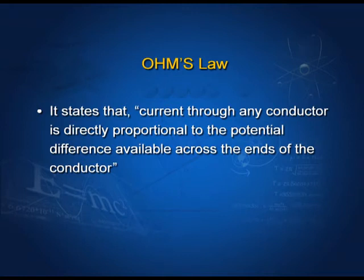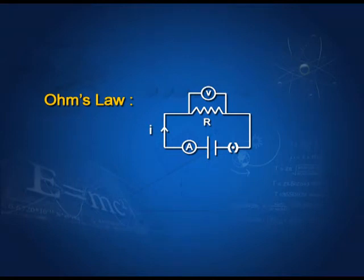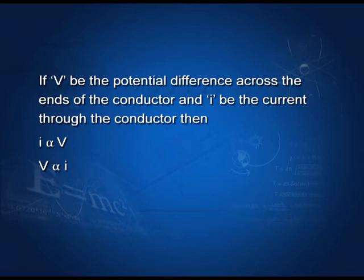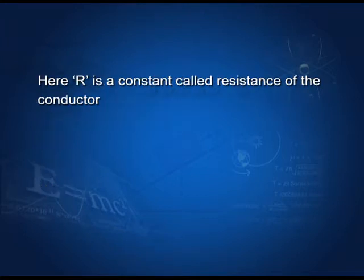Ohm's Law states that current through any conductor is directly proportional to the potential difference available across the ends of the conductor, provided all the physical conditions like temperature and stress remain constant. If V is the potential difference and i is the current through the conductor, then i is directly proportional to V. Putting a coefficient of proportionality R, we get V equals i into R. Here R is called resistance. Its SI unit is ohm.